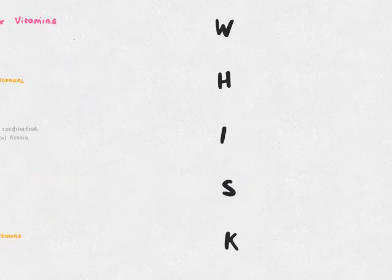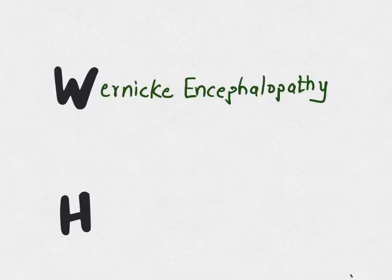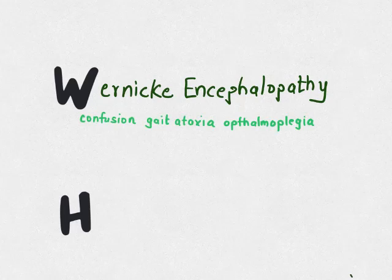W is for Wernicke's encephalopathy — a triad of global confusion, gait ataxia, and ophthalmoplegia, typically corrected with injectable thiamine. Again seen in chronic alcoholism, it can be precipitated by a sudden IV glucose load without vitamin B1.